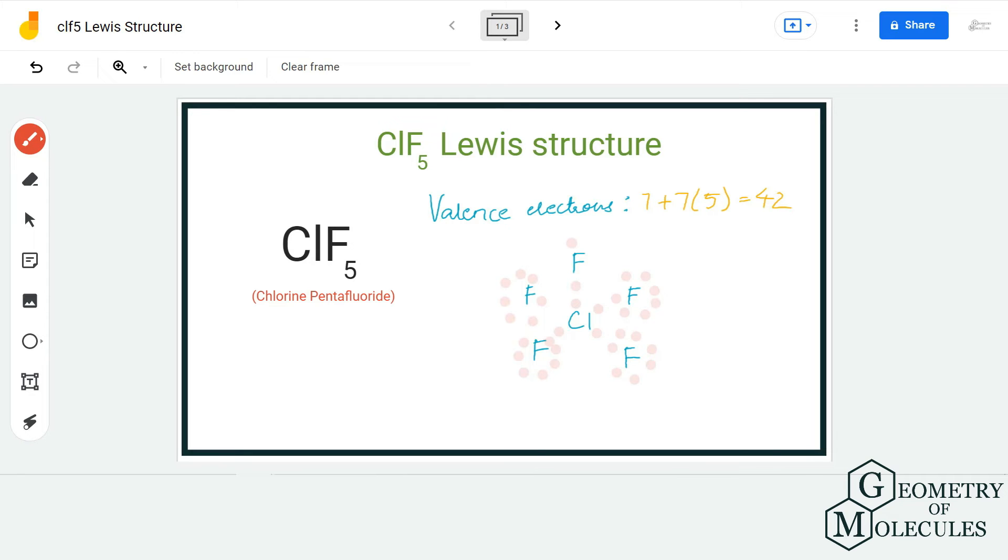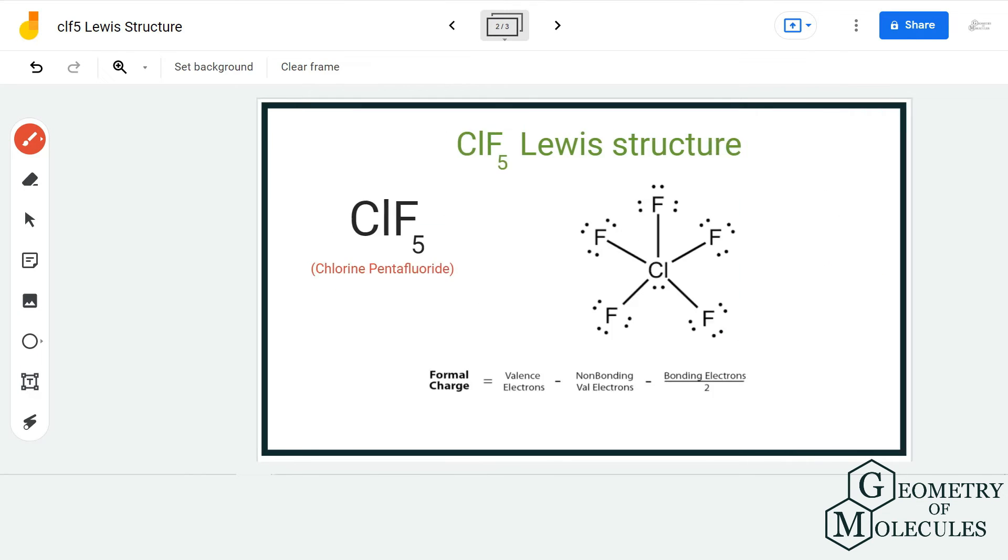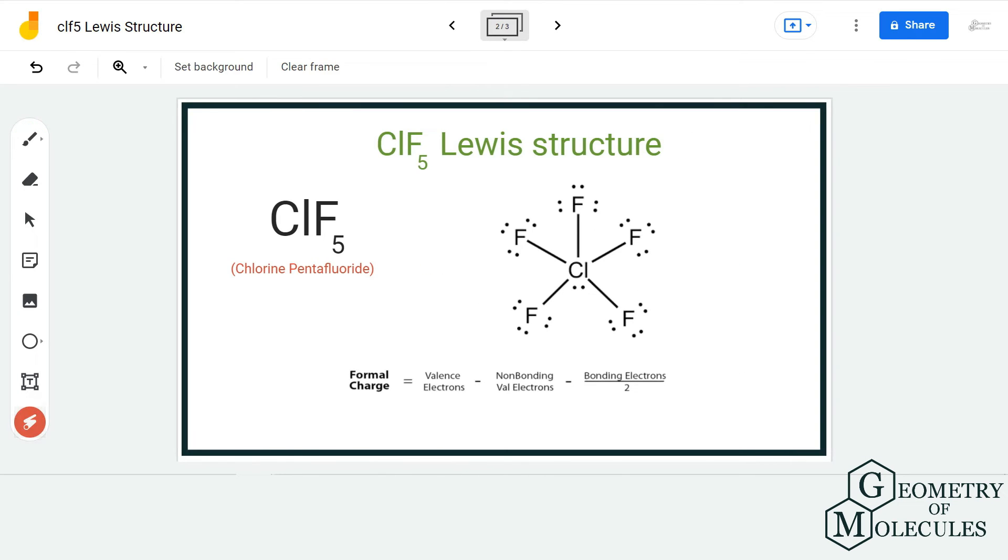You might wonder how is that even possible because it already has 10 valence electrons. Well, chlorine can have expanded octets and it can have a maximum of 12 valence electrons in its outer shell.